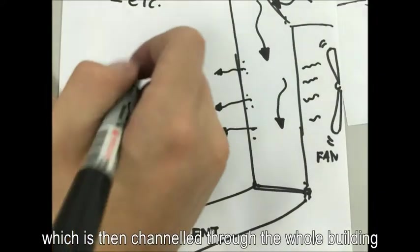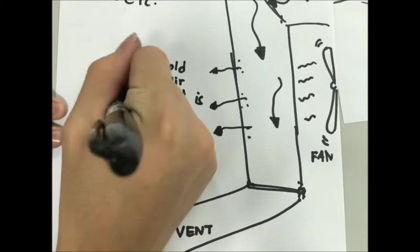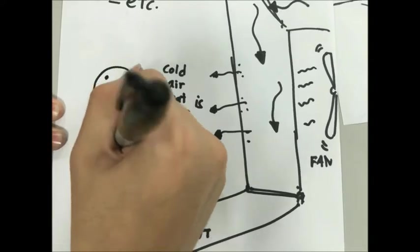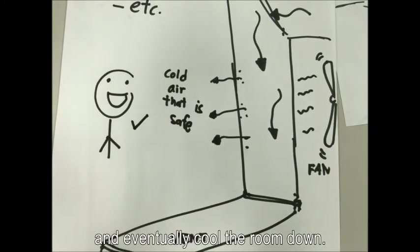The cold air is then channeled through the whole building, cooling our rooms. Waste cold air will enter the room and absorb its heat. A fan installed to circulate the air in the room will eventually cool the room down.